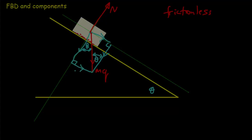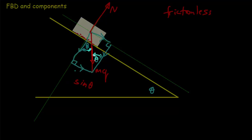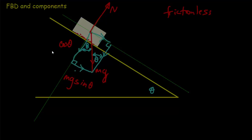For the component along the ramp, it's opposite the angle, so it's sine theta times the hypotenuse mg, giving mg sine theta — the component of the weight pushing the block along the incline. The other side is adjacent to theta, so it's cosine theta times mg, giving mg cosine theta. The component mg cosine theta holds the block on the ramp; mg sine theta pushes the block down the ramp.